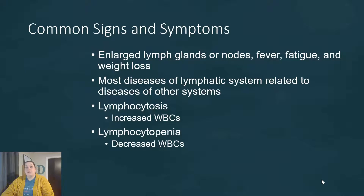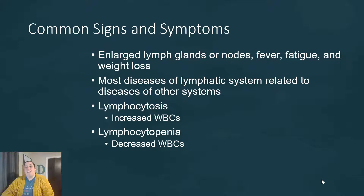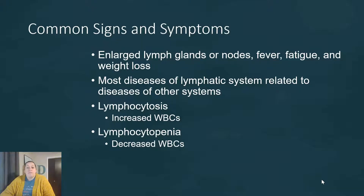Most diseases of the lymphatic system are related to diseases actually from other systems — the lymphatic system is just affected by those other diseases. Now there are some things we can look for with blood tests, specifically certain white blood cells called lymphocytes. If the white blood cell count is increased and high, we call this lymphocytosis, or also leukocytosis. On the other hand, we also have lymphocytopenia, which is a decreased amount of white blood cells, also termed leukocytopenia. So if our blood tests come back with too many white blood cells it's the cytosis; if we have too little it's the penia.